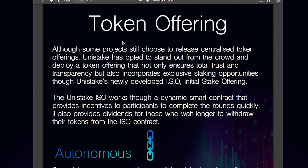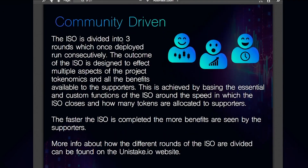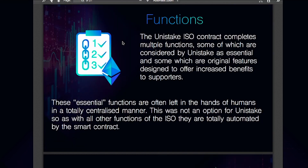Now let's discuss a little bit about the token sale. Unistake has opted to stand out from the crowd and deploy a token offering that not only ensures total trust and transparency, but also incorporates exclusive staking opportunities through Unistake's newly developed ICO — initial stake offering — where one of the most important factors is that every function is executed automatically by the smart contract. This means that once launched, the ISO cannot be edited, paused, or cancelled by anyone, including the original developers. The token sale is also community driven, being divided in three rounds, which once deployed consecutively distribute rewards based on speed. Basically, the faster the ICO is completed, the more benefits are seen by the supporters.